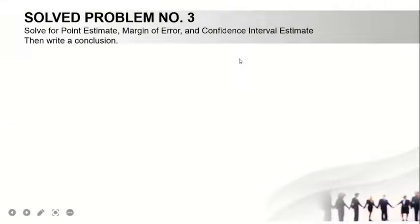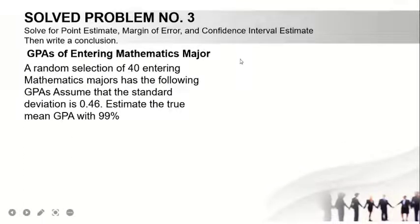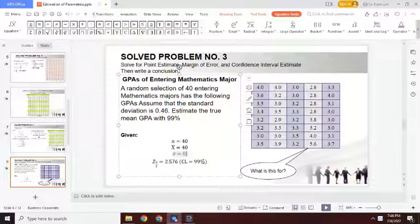Next, solved problem number 3: solve for point estimate, margin of error, and confidence interval estimate, then write the conclusion. This is the word problem: GPAs of entering mathematics majors. A random selection of 40 entering mathematics majors has the following GPAs. Assume that the standard deviation is 0.46. Estimate the true mean GPA with 99% confidence level. Our sample size is 40, sample mean is 40. Later we'll find out where we got this.